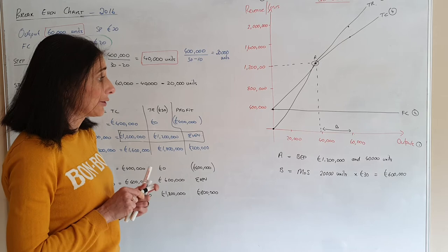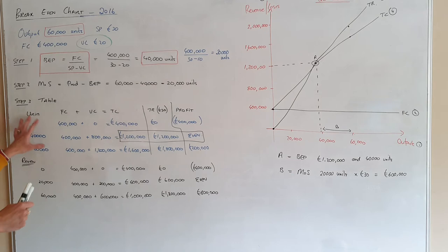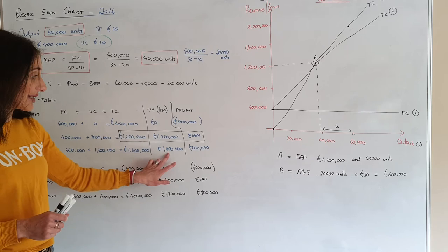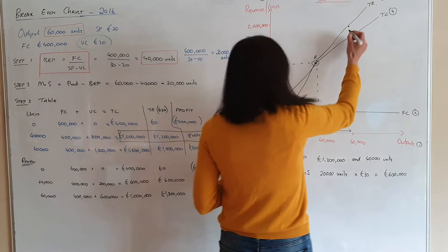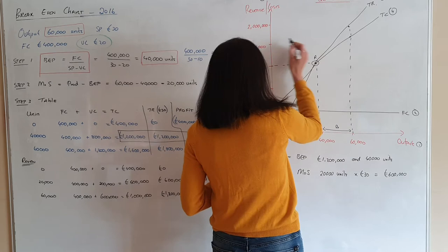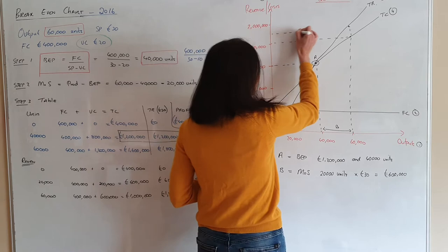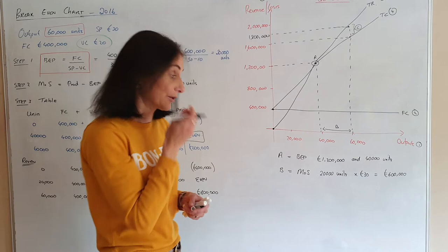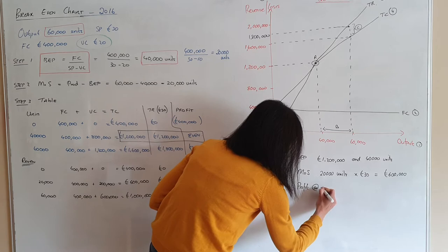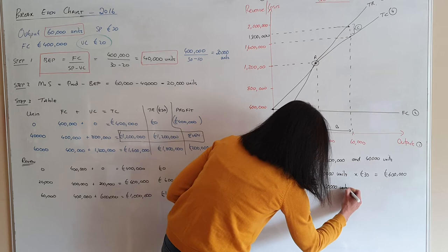Part C asks: what is your profit at the capacity of 60,000 units? At 60,000 we know our cost is £1.6 million and our revenue is £1.8 million, so we should be showing a profit of £200,000. 'Illustrate' means you have to show it on the diagram. At 60,000 units the total cost is £1.6 million and the total revenue is £1.8 million, so the profit from here to here is Point C. The difference between the two is £200,000, so C equals profit at 60,000 units = £200,000.